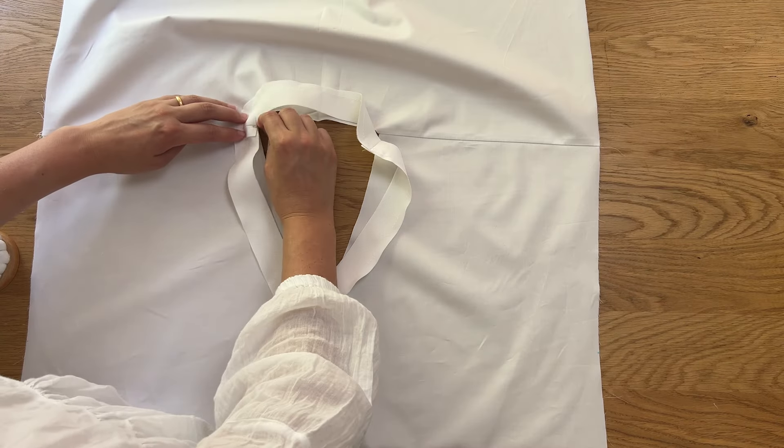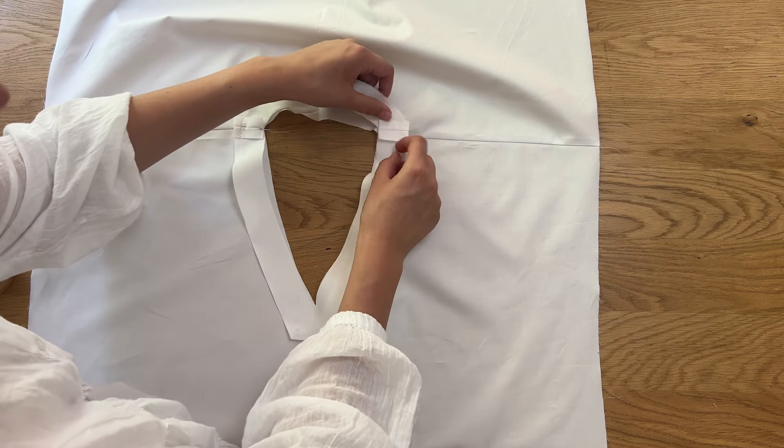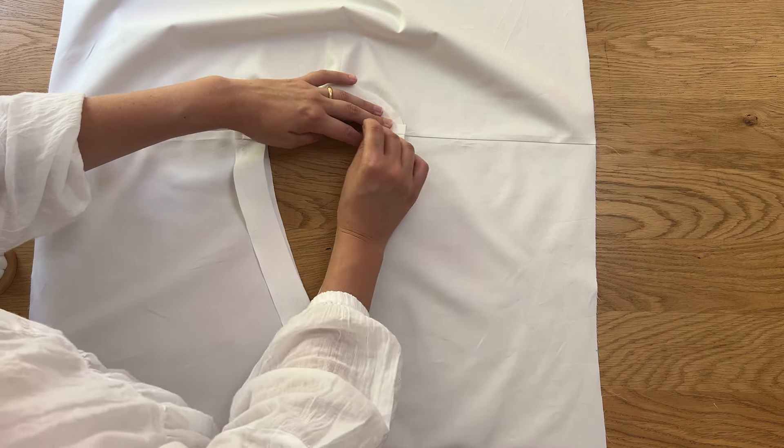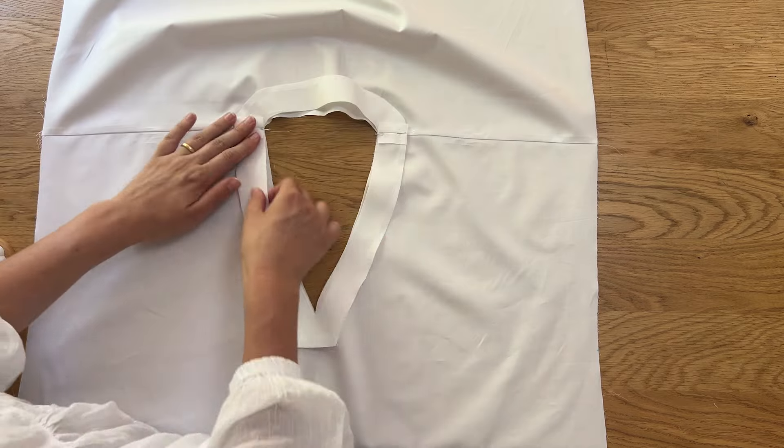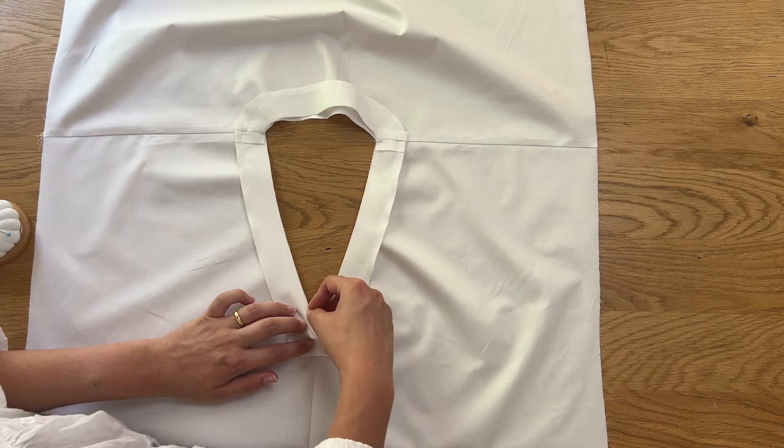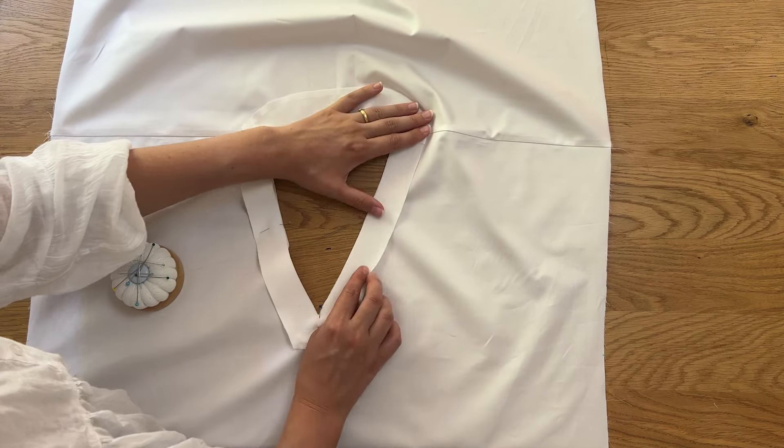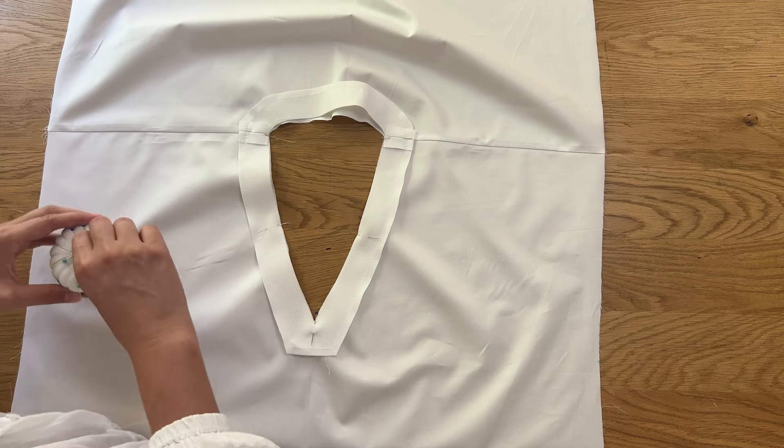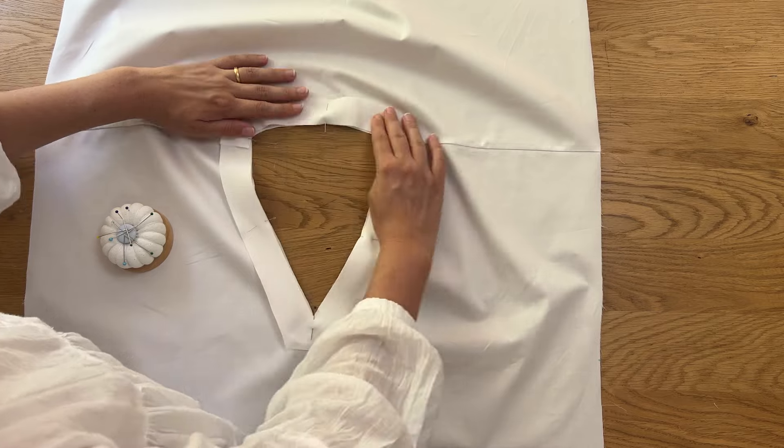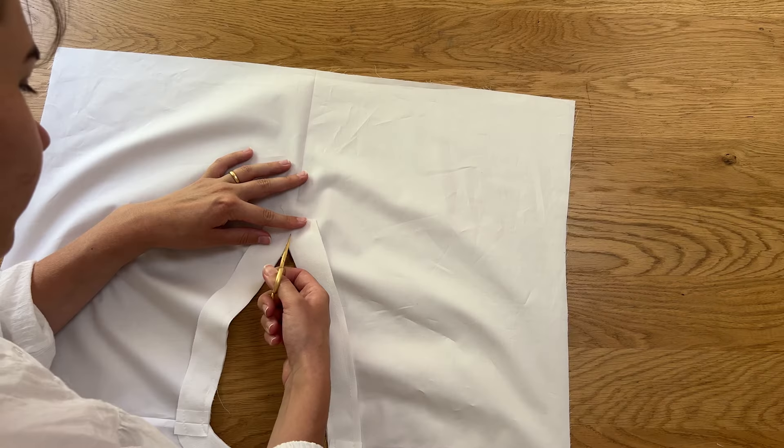With the right sides facing together, line up the facing to match the neckline of the dress and pin. Sew the facing onto the dress neckline with a one centimeter seam allowance.